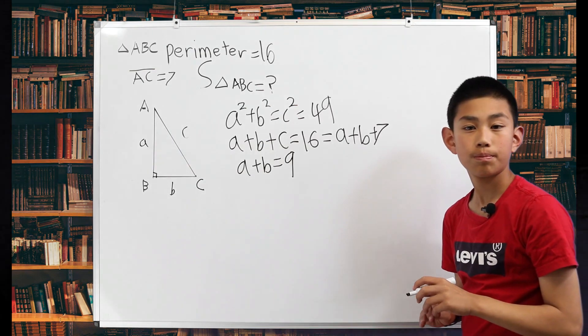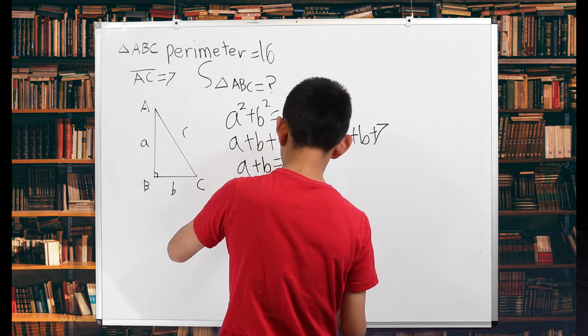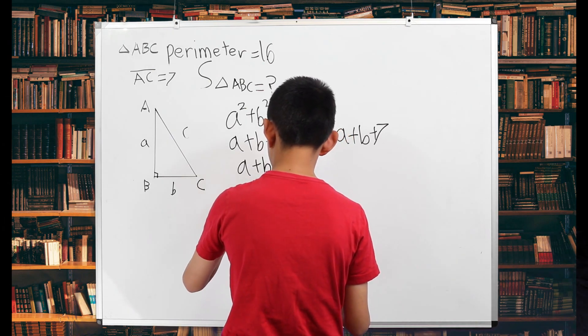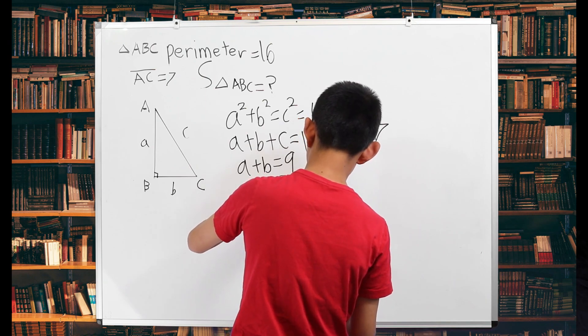And our final formula is going to be A plus B squared is 81.